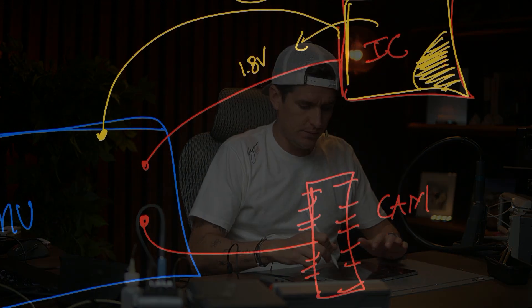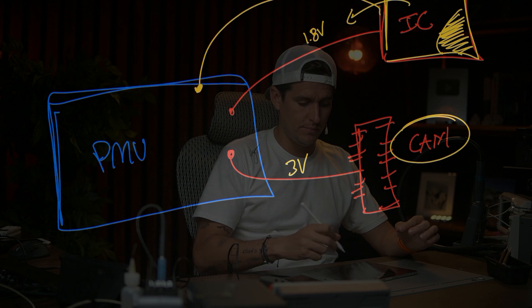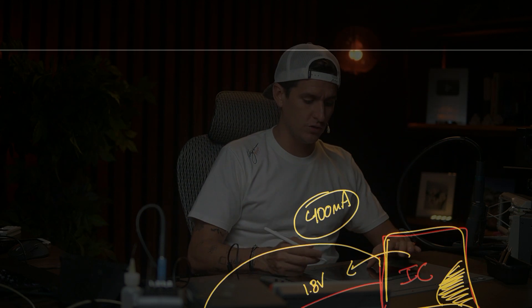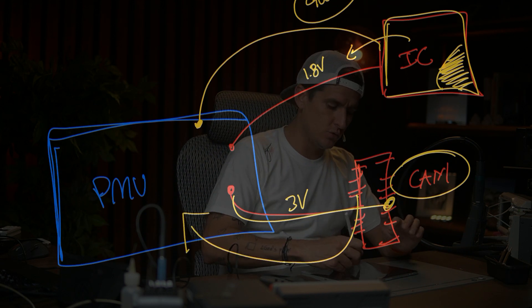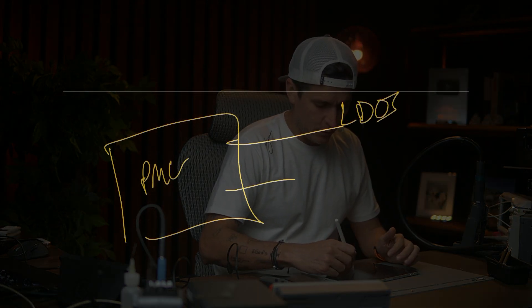When the PMU detects that abnormal consumption, it says 'something happened, I need to save myself' and it turns off. That's why the phone is turning off — it detects a problem and shuts down. The same can happen with a camera: if it receives, say, 3 volts and draws 400 milliamps, the PMU receives that information and shuts down.